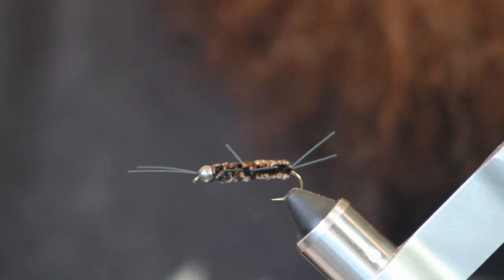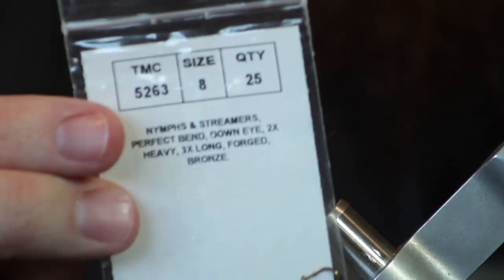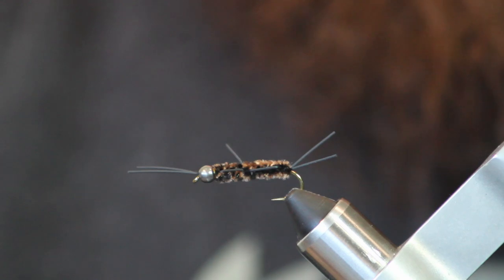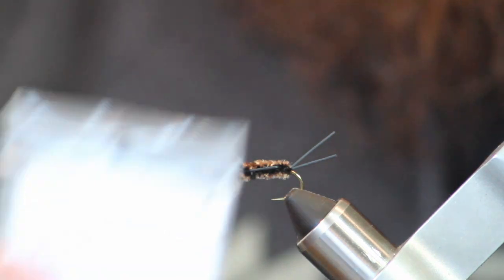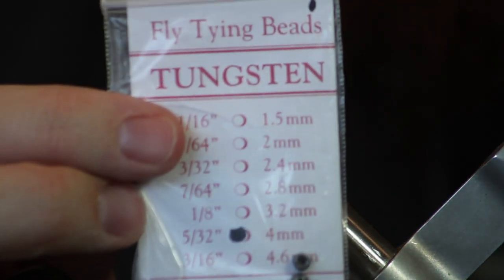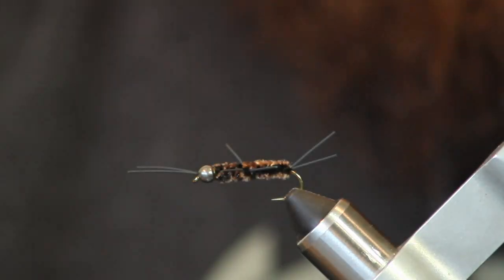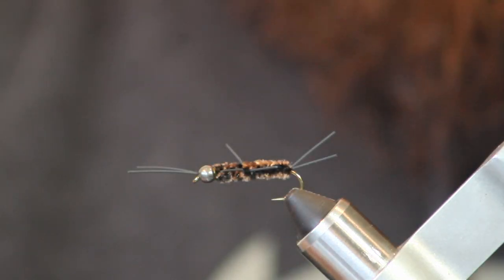The hook we're tying on today is a TMCO 5263 in a size 8. Any of these 2X long streamer type hooks work really well. I'm using just a plain old tungsten bead. This happens to be a 4mm. I like these kind of heavy in the wintertime. They'll really get down for you.